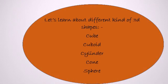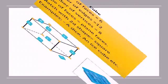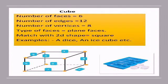Today let's learn about different kinds of shapes: cube, cuboid, cylinder, cone, and sphere. Let's first learn about the cube. Here we are going to count the number of faces, number of edges, and number of vertices, and also the type of faces and which shapes match. To better understand, please take a dice in your hand, because the dice shape is similar to a cube — a dice is an example of a cube. The number of faces in a cube: there are 6 faces.